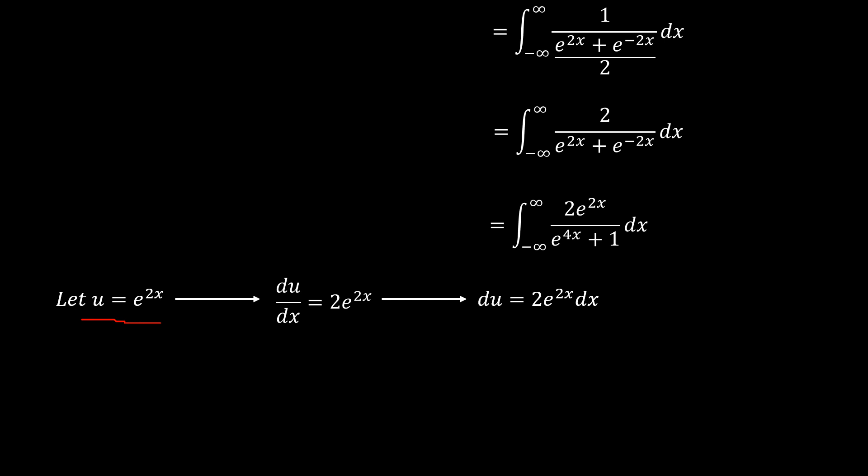So the lower bound here would tend to 0, and the upper bound would still tend to positive infinity. So this integral here, with a substitution, can now be equated to the integral from u equals 0 to u tending to positive infinity of du over u^2 plus 1.